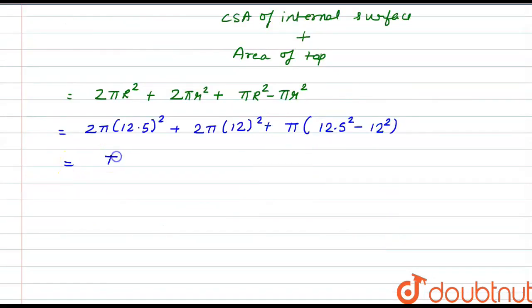If we take π common, we have 3 × 12.5² plus 12².